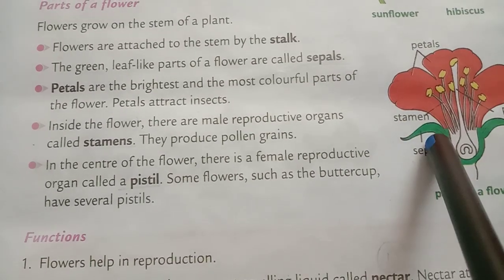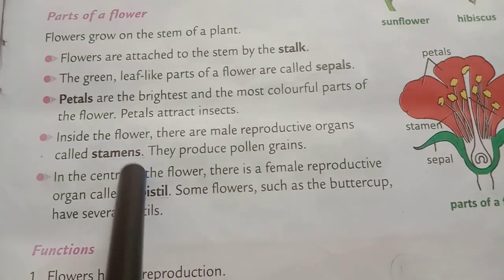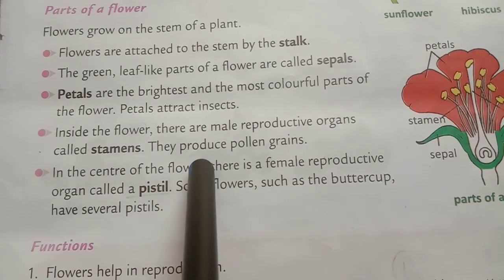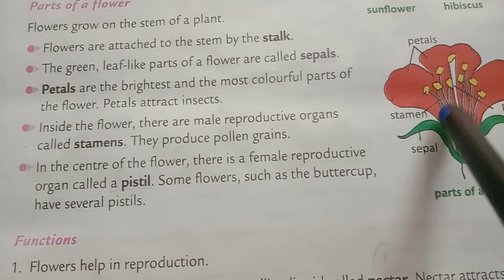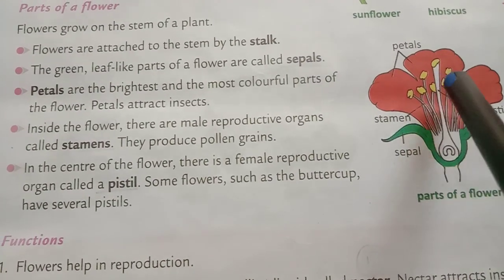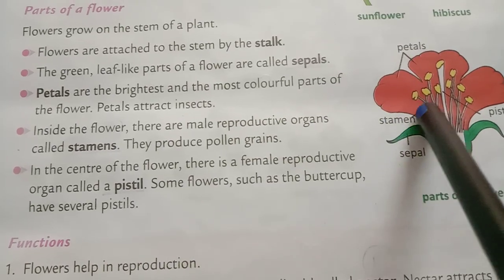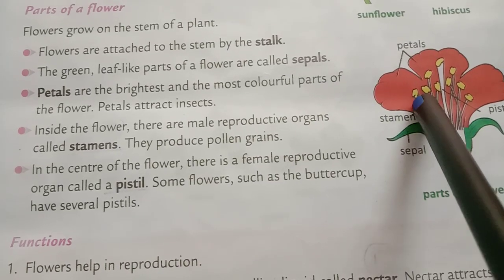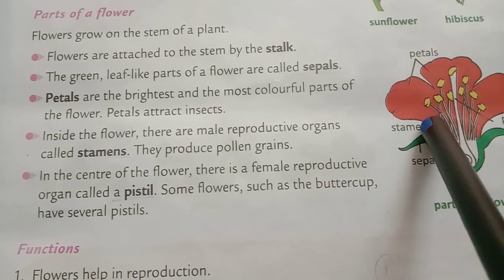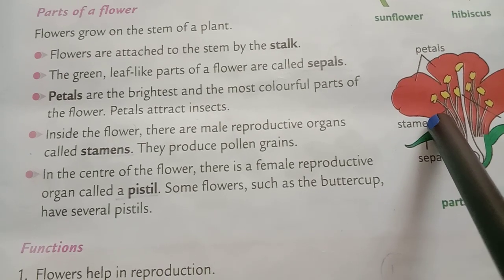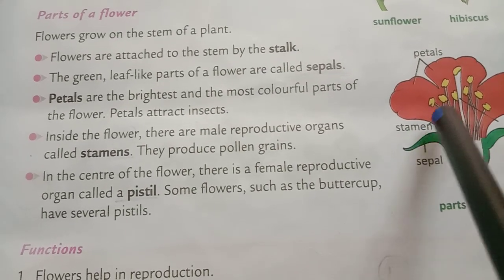Inside the flower there are male reproductive organs called stamens. They produce pollen grains.